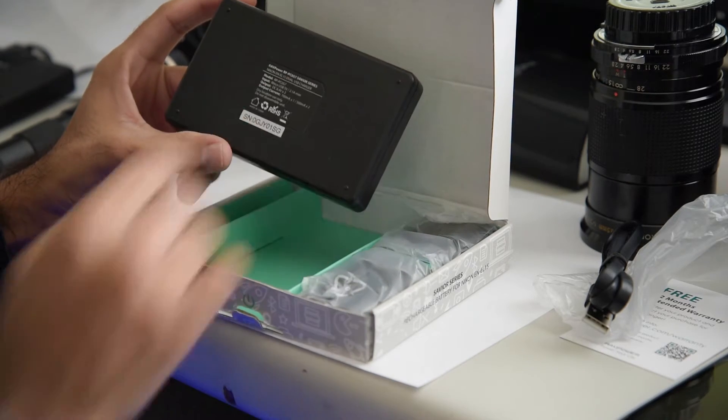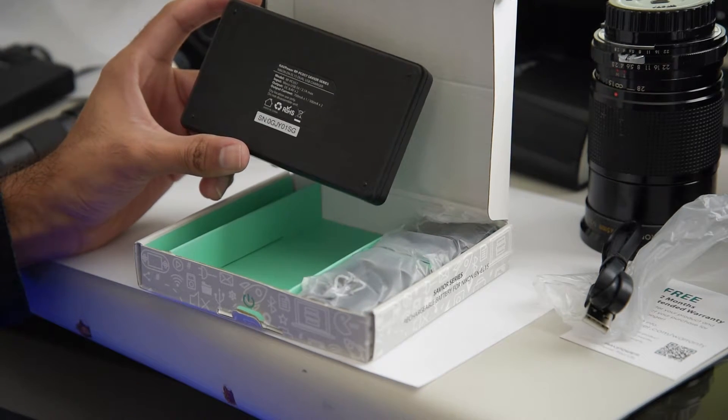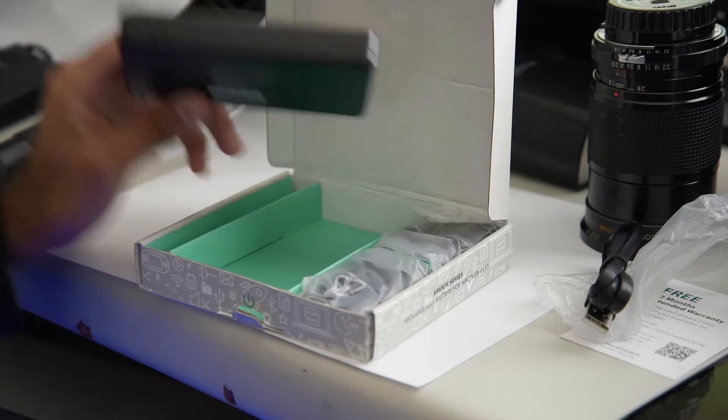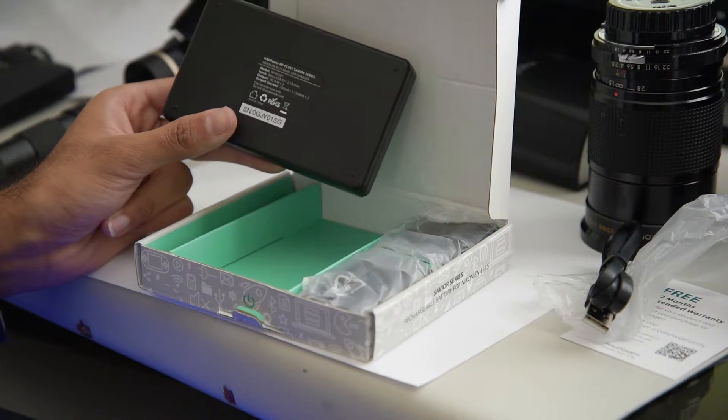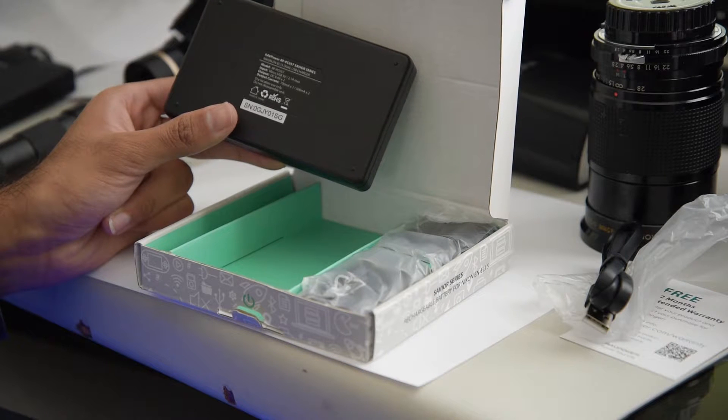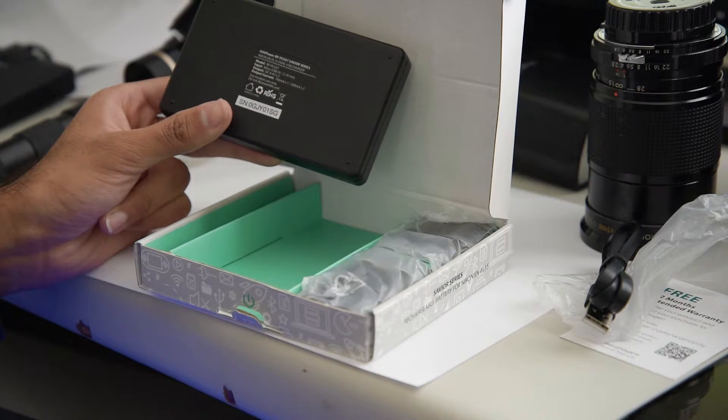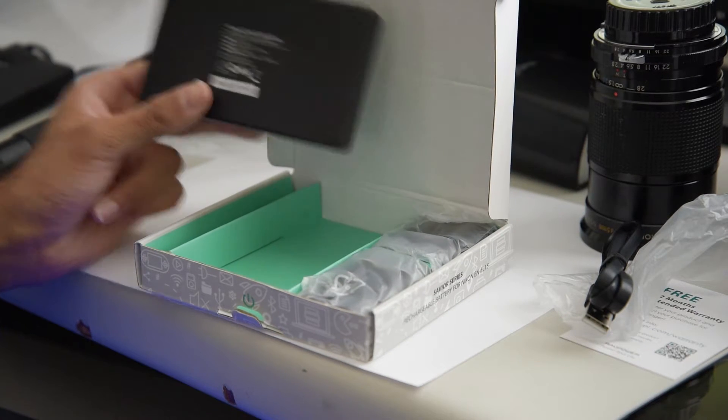So yeah, output is 8.4 volts and it has two of them so it's times two. It doesn't seem to charge very fast. It's a 500 milliamp hour output. So that's going to be quite a bit slower than your stock Nikon charger.